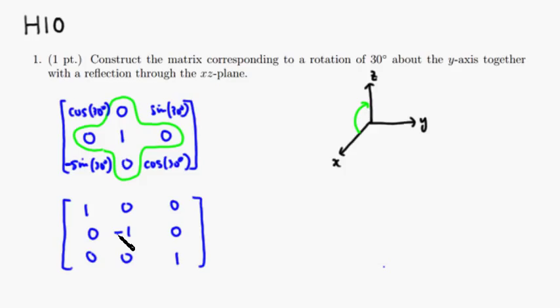Then to find a matrix which does both at the same time, all you have to do is multiply these two matrices together. So the answer is going to be the product of these two matrices. All right, that's it. I hope that this will get you guys going.